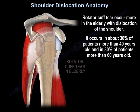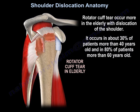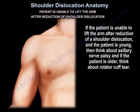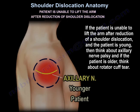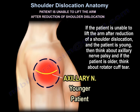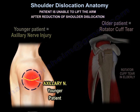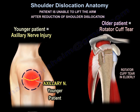Rotator cuff tears occur more in the elderly with dislocation of the shoulder — about 30% in patients more than 40 years and 80% in patients more than 60 years. If the patient is unable to lift the arm after reduction of shoulder dislocation and the patient is young, think about axillary nerve palsy. If the patient is old, think about rotator cuff tear.